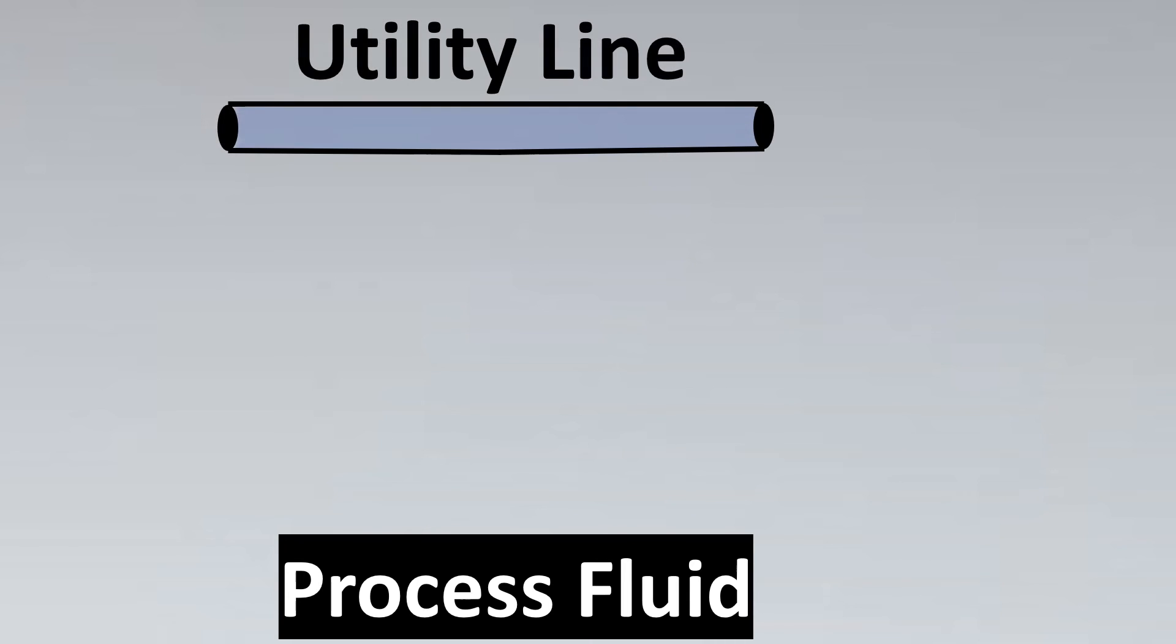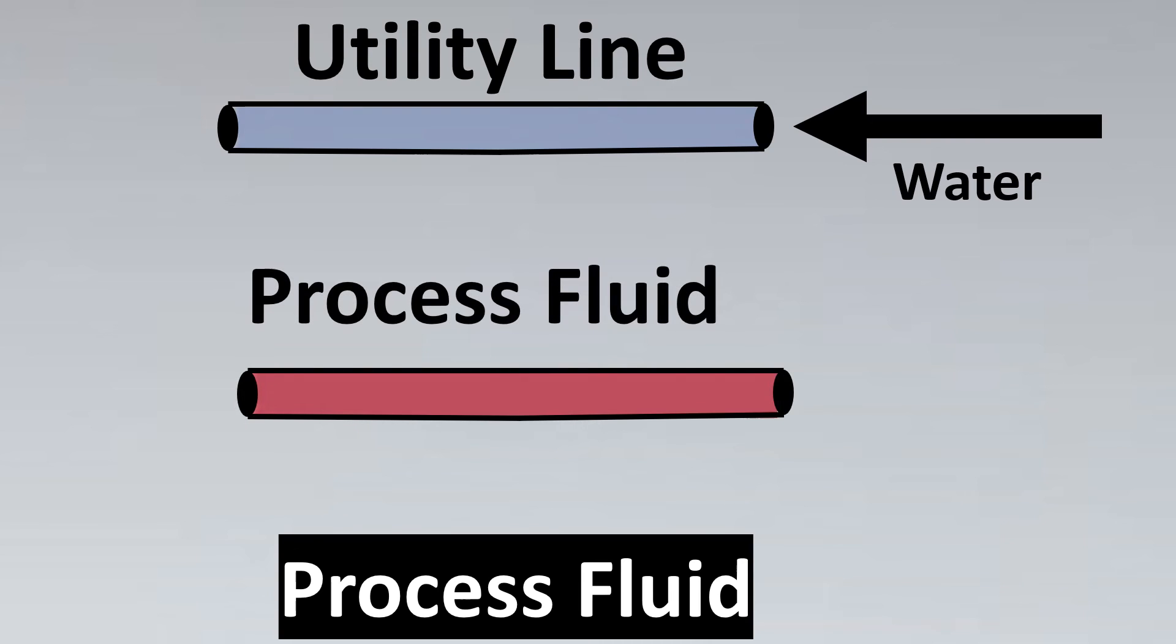Now let's look into the next case, which is the process fluid. Especially as a rule of thumb, or generally, if it's a utility line and you have water, it is recommended you might go for a reduced bore valve for such cases. It depends on client to client design basis, but usually for such cases you can go for a reduced bore valve and save the cost of the project. Whereas for process fluids, usually it depends on how critical the process fluid is. Example: certain acids or viscous fluids, or such cases where you might have to go for full bore valves.